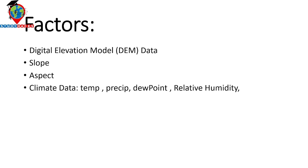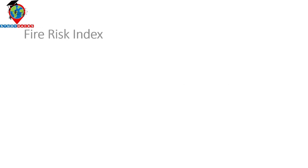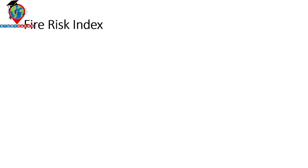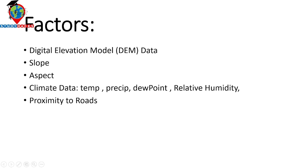We also use climate data: higher temperature can dry out vegetation and make it more favorable for fire. Lack of rainfall can dry out the forest, while lightning during storms can ignite fires. We also consider dew point or relative humidity, and distance to road or proximity to road, which has more influence on making a forest fire risk zone. We also include NDVI.